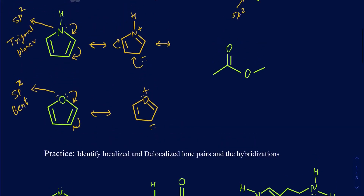Only one lone pair on this oxygen is delocalized. When I look at the hybridization on this particular oxygen, it's going to be sp2. Since it's sp2, and out of those three hybrid orbitals, one of them contains the lone pair and the other two contain the bonding domains, the shape is still going to be bent.